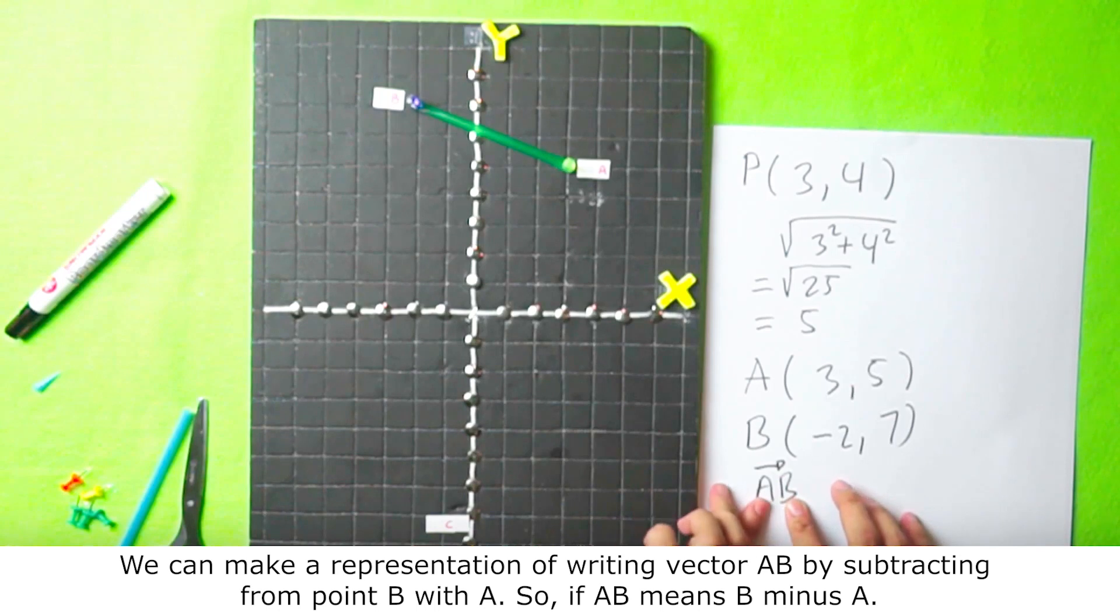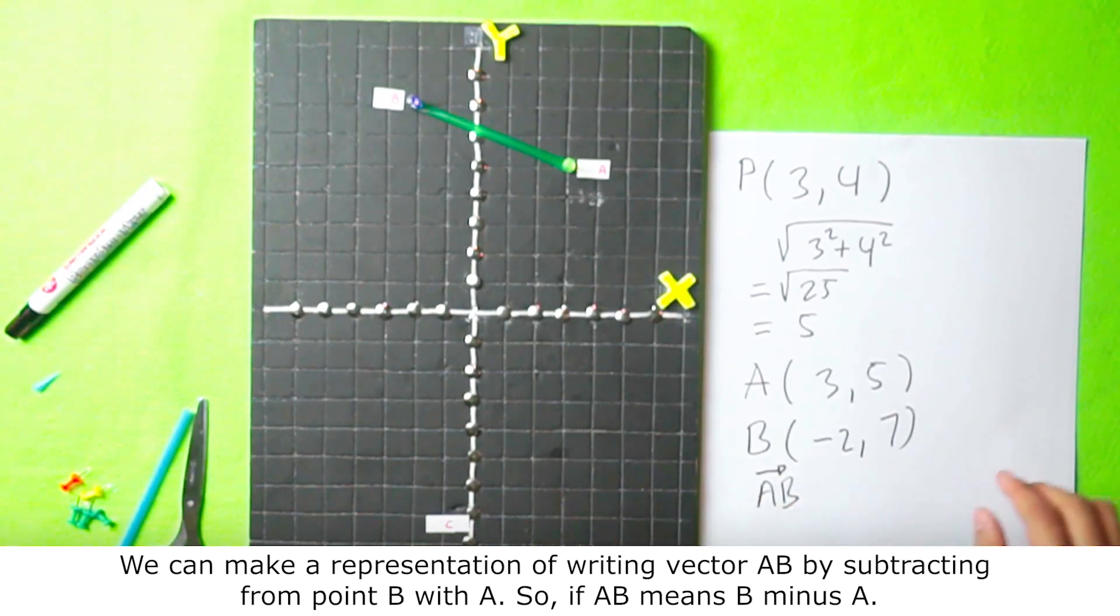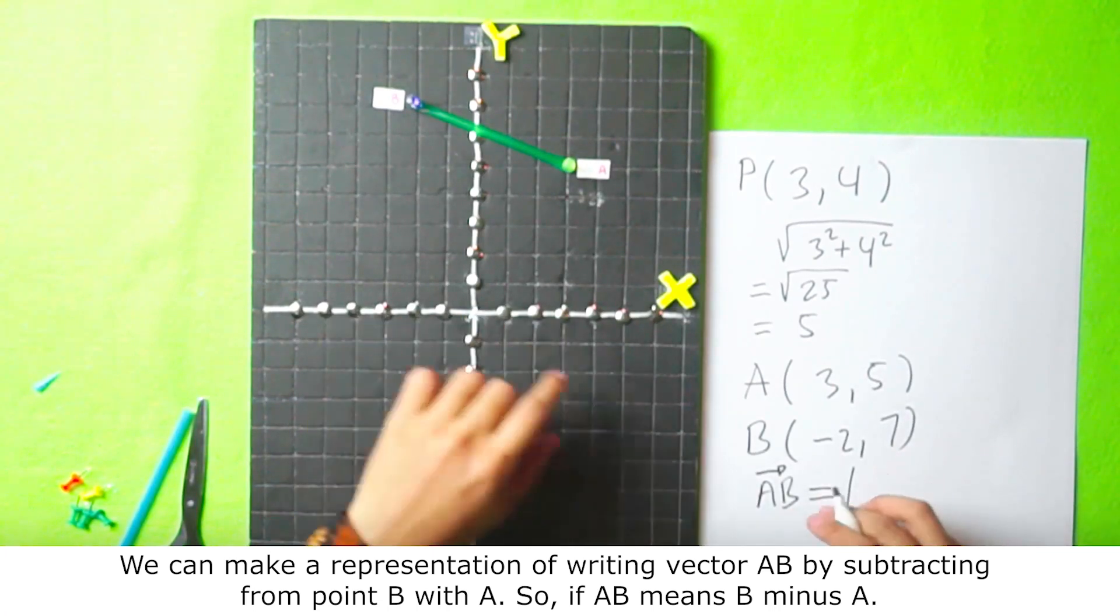We can make a representation of writing vector AB by subtracting from point B with A. So if AB, it means B minus A.